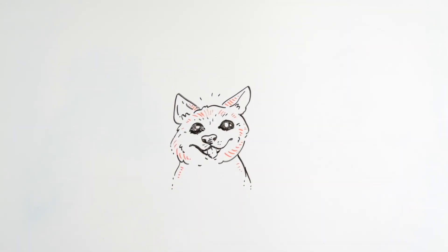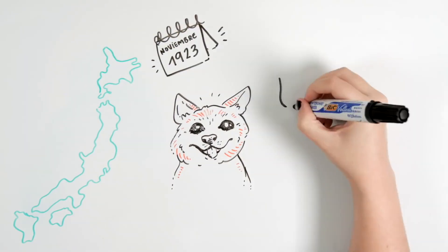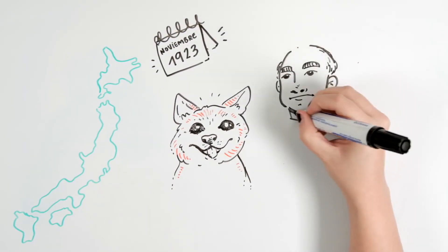Hachiko was a dog who was born in the Akita Prefecture in Japan on November the 10th, 1923. A year later, he was found by Hidesaburo Ueno, professor from the University of Tokyo.